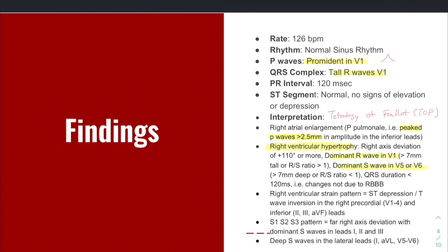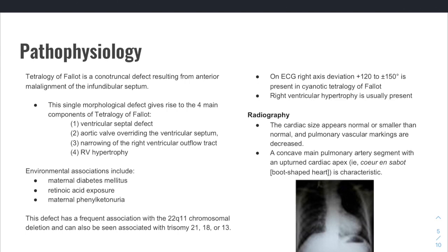Other things you may find are ST depression and T wave inversion in your right precordial leads and your inferior leads. That's a right ventricular strain pattern. And then a far right axis deviation with dominant S waves in leads one, two, and three, or deep S waves in your lateral leads, which are five, six, lead one, and AVL. So that is just a little bit of your ECG pattern there. But let's talk a little bit more about Tetralogy of Fallot.